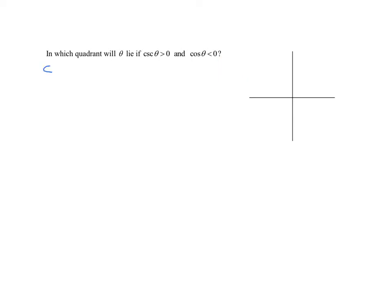So remember, we know that the cosecant of theta, you should all remember that is 1 over the sine of theta, and we're given that that is greater than 0. In other words, we're told it is positive.